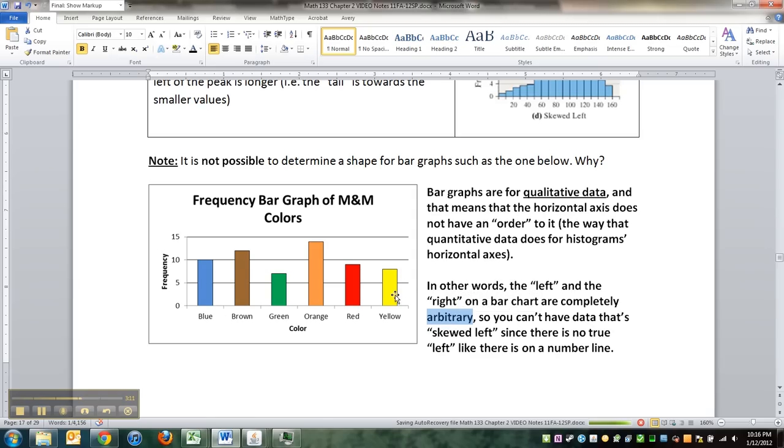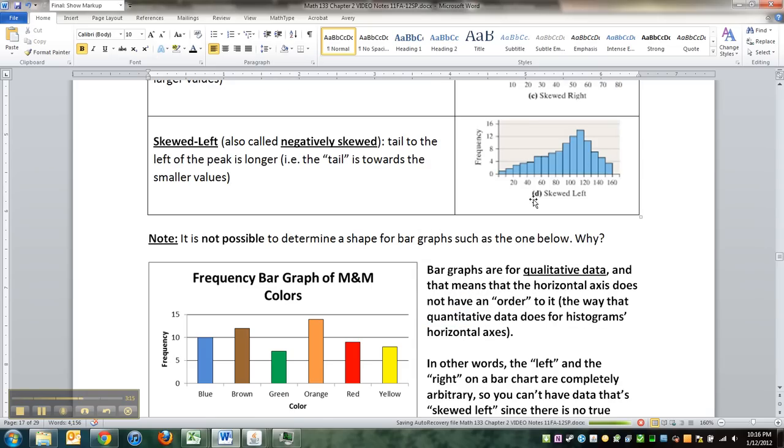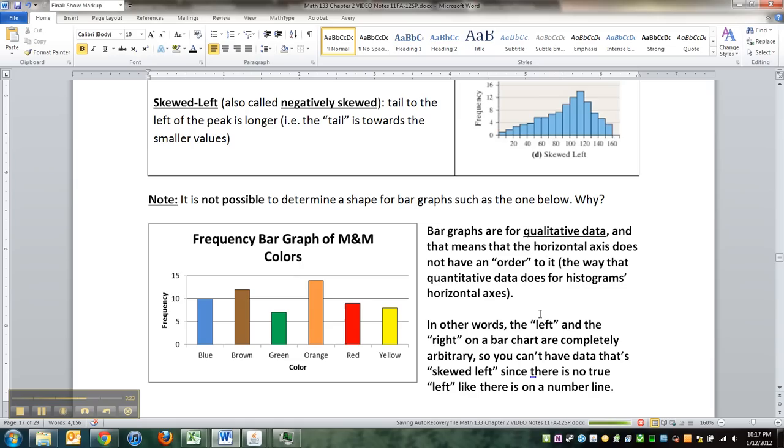We decided to put blue there and yellow there. We could have flipped it all around. You can't do that with histograms, because we all know how number lines work. 20 is to the left of 160. You can't flip it around. Quantitative data has an inherent scale and order. It's a number line when you look at this. When you look at this horizontal axis here, it is a number line. When you look at this horizontal axis here, it isn't. That's because this graph is for qualitative data, but this graph is for quantitative data.